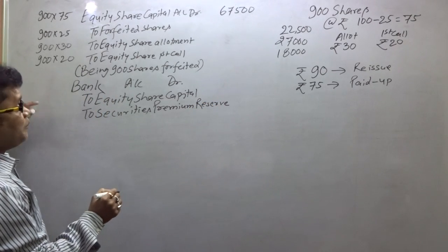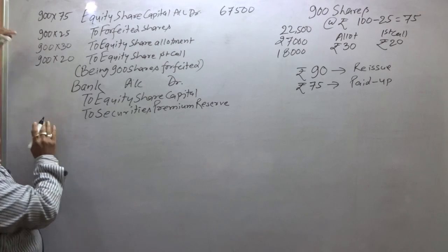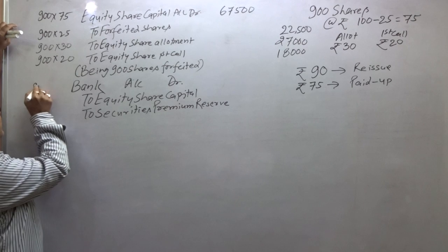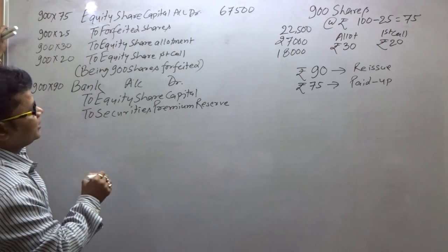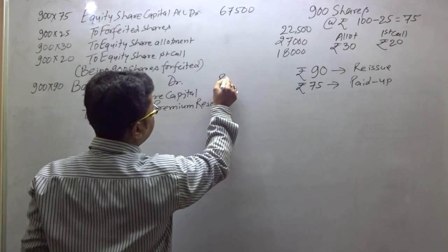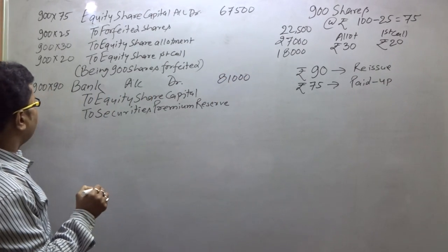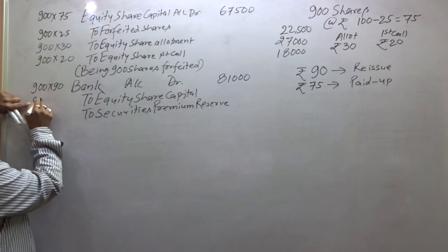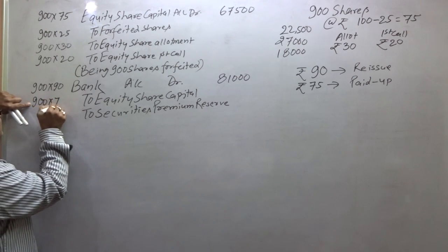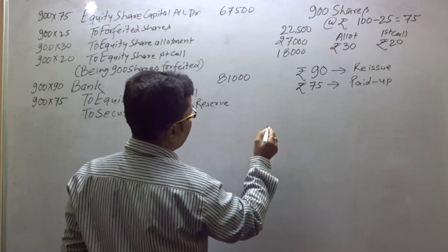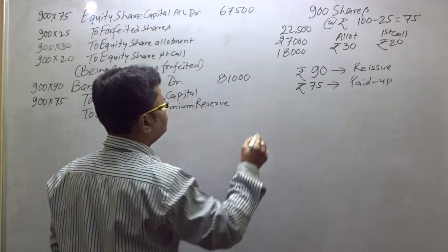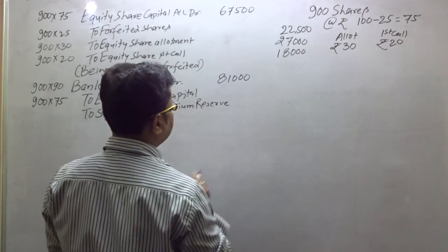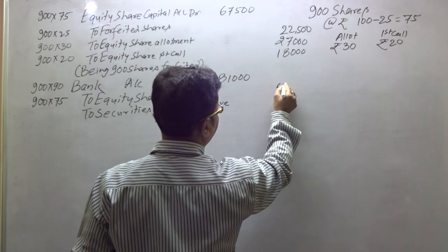Now the bank amount: the company reissued all 900 shares, so 900 into ₹90 equals ₹81,000 in the bank. The paid-up value per share is ₹75, so in the capital account: 900 into 75 equals ₹67,500.